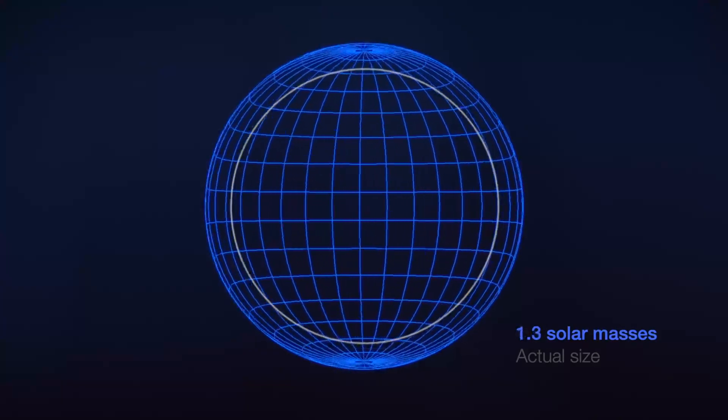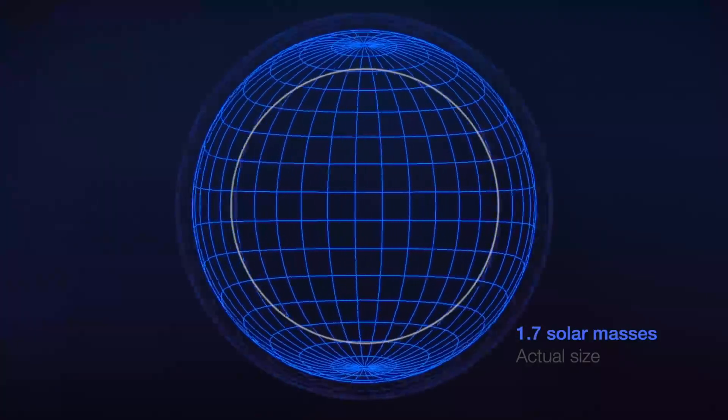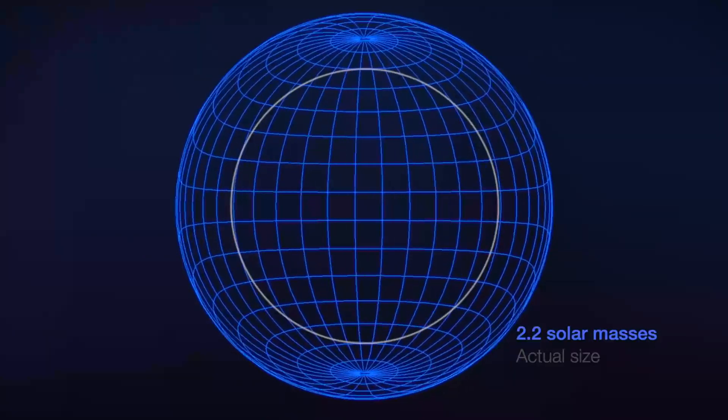This has the strange effect of making a pulsar look bigger than it really is. The more mass an object of a given size contains, the more it distorts space-time, and the more we see of its far side.